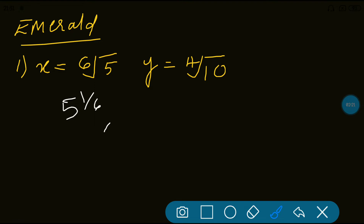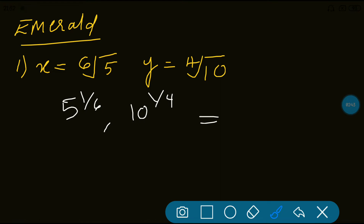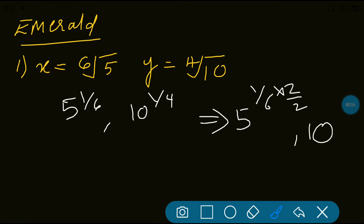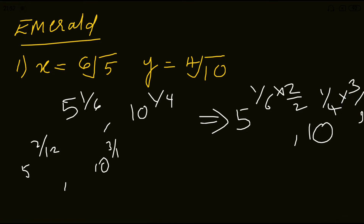We have 5 to the power 1/6 and 10 to the power 1/4. The first task is to make the denominators the same. The LCM of 6 and 4 is 12. So I'm going to multiply: 5 to the power 1/6 multiplied by 2/2, to make the denominator 12. Same here: 10 to the power 1/4 multiplied by 3/3, so it becomes 12. Now it will be 5 to the power 2/12 and 10 to the power 3/12.